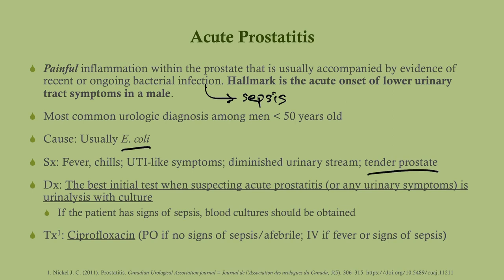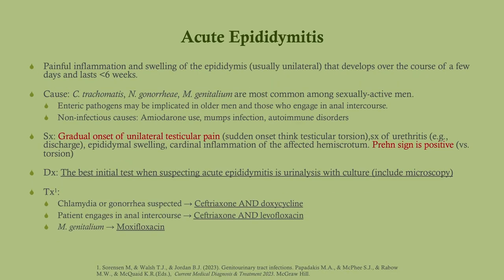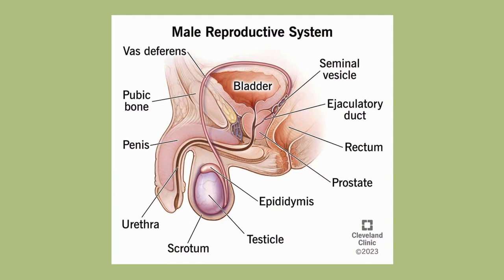The best initial test is a urinalysis with culture, and we also want to do urine microscopy. If the patient has signs of sepsis, get blood cultures and start antibiotics. Treatment is an antibiotic — we generally go with fluoroquinolones, so ciprofloxacin is the best to start with. Give it orally if there's no sepsis or fever; however, if they do have fever or signs of sepsis, give it IV.